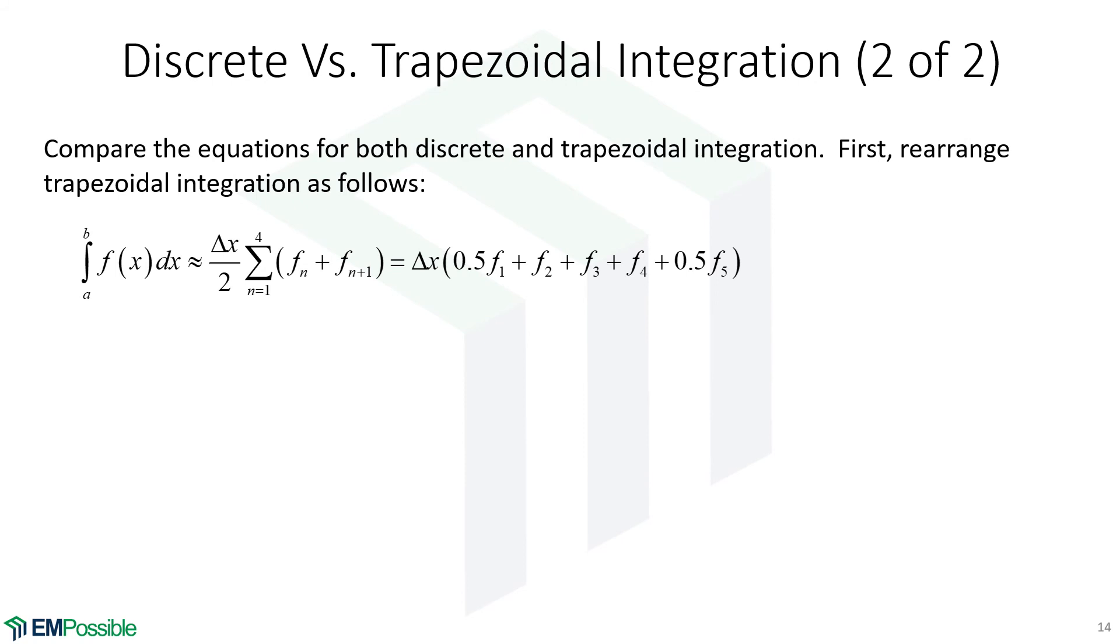I want to compare the equations we have for trapezoidal and discrete integration. So before, we had a delta X divided by 2. And then inside these parentheses, we had basically all of the function values being added up. And we were multiplying these interior ones by 2, but not the endpoints. So what I did is I've moved the divide by 2 in here. So we have basically, we're summing all of the function values, but multiplying these two endpoints by 0.5. And so we just have a delta X to the outside. The reason I did that is because I wanted this equation to look more like what the equation looks like for discrete integration. But make no mistake, this is trapezoidal integration.